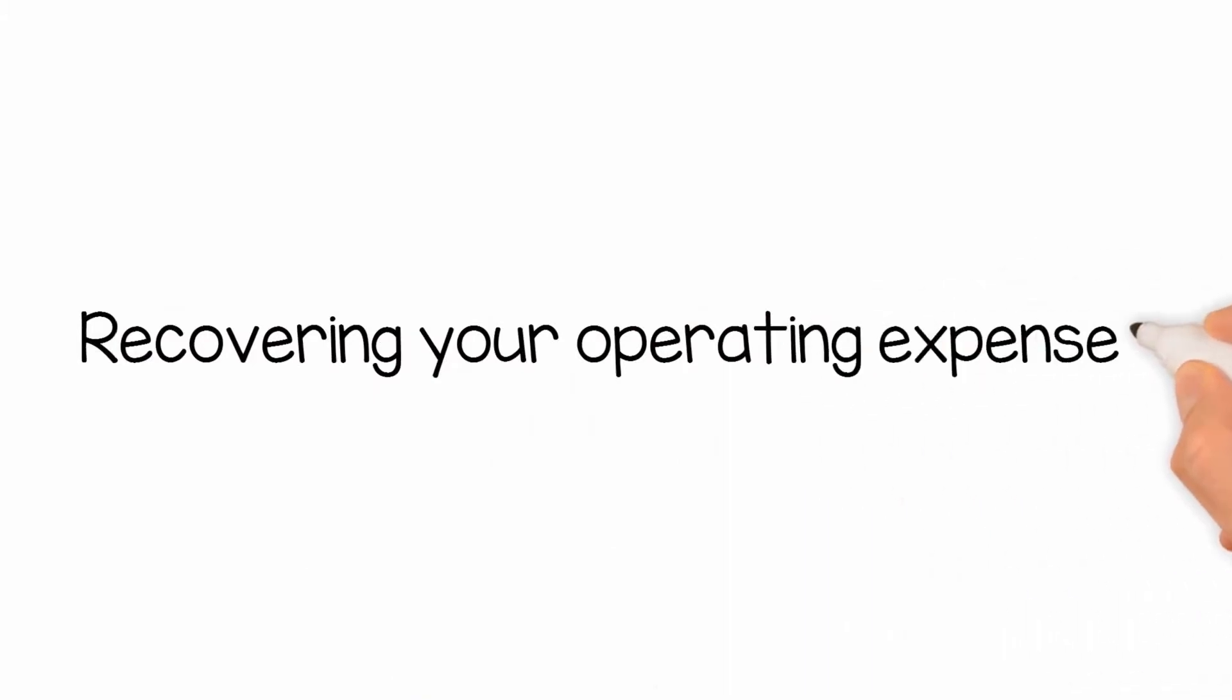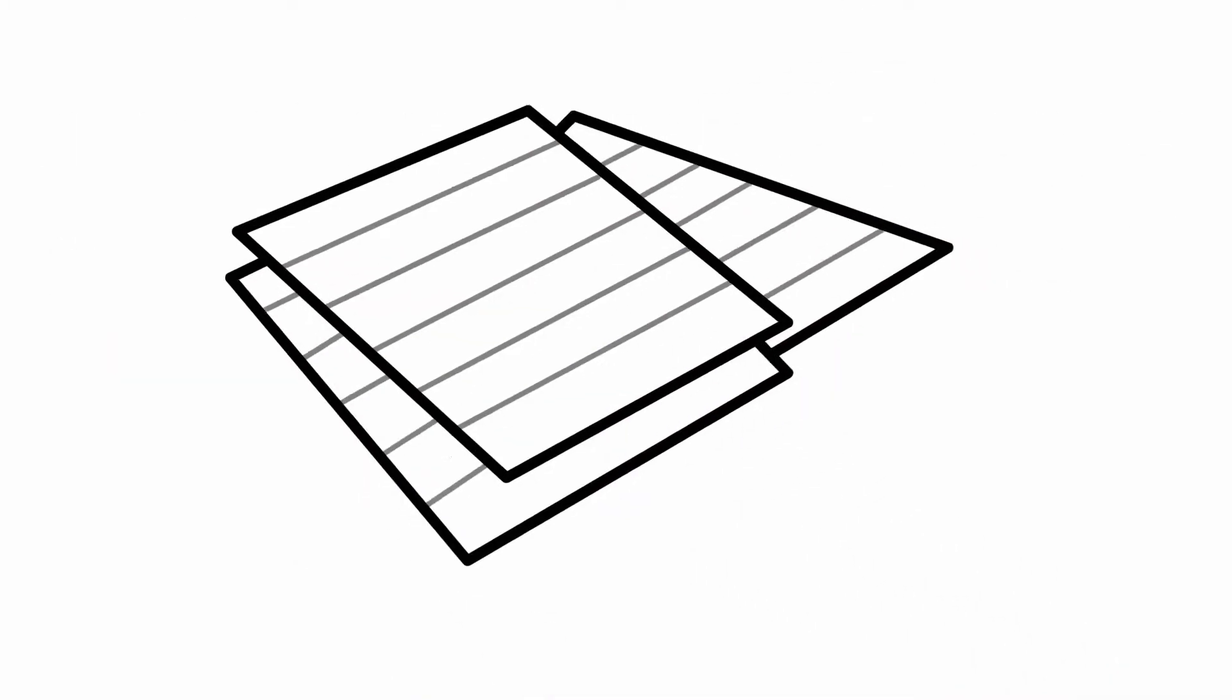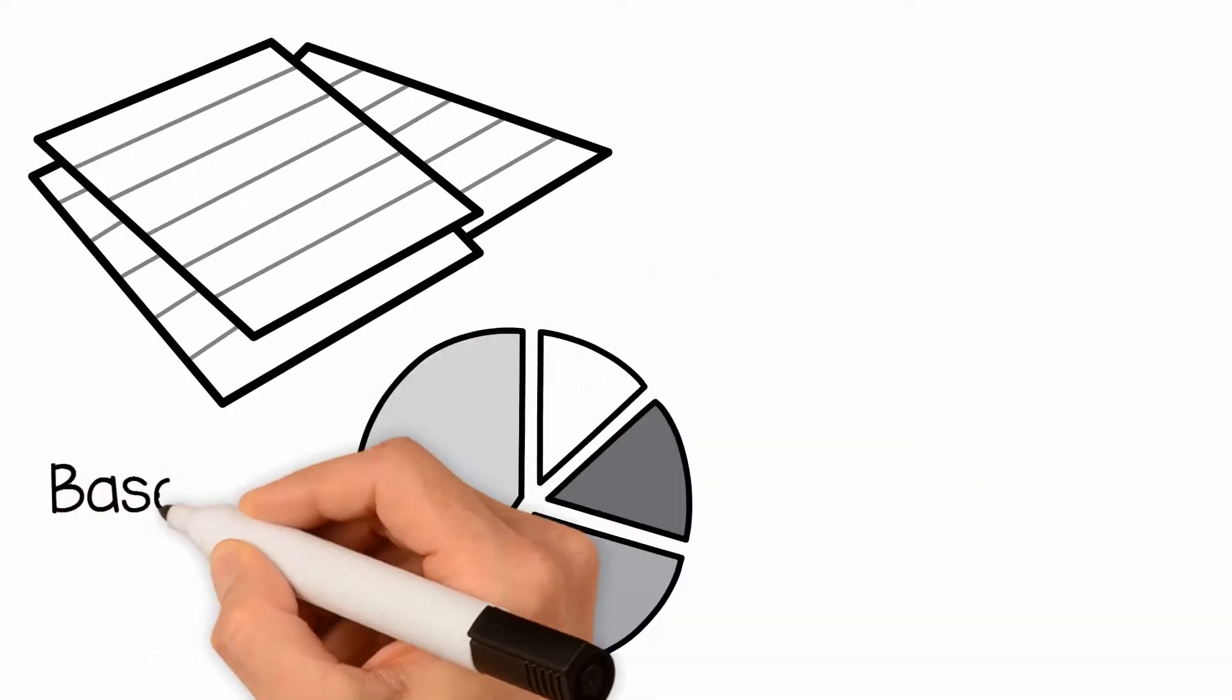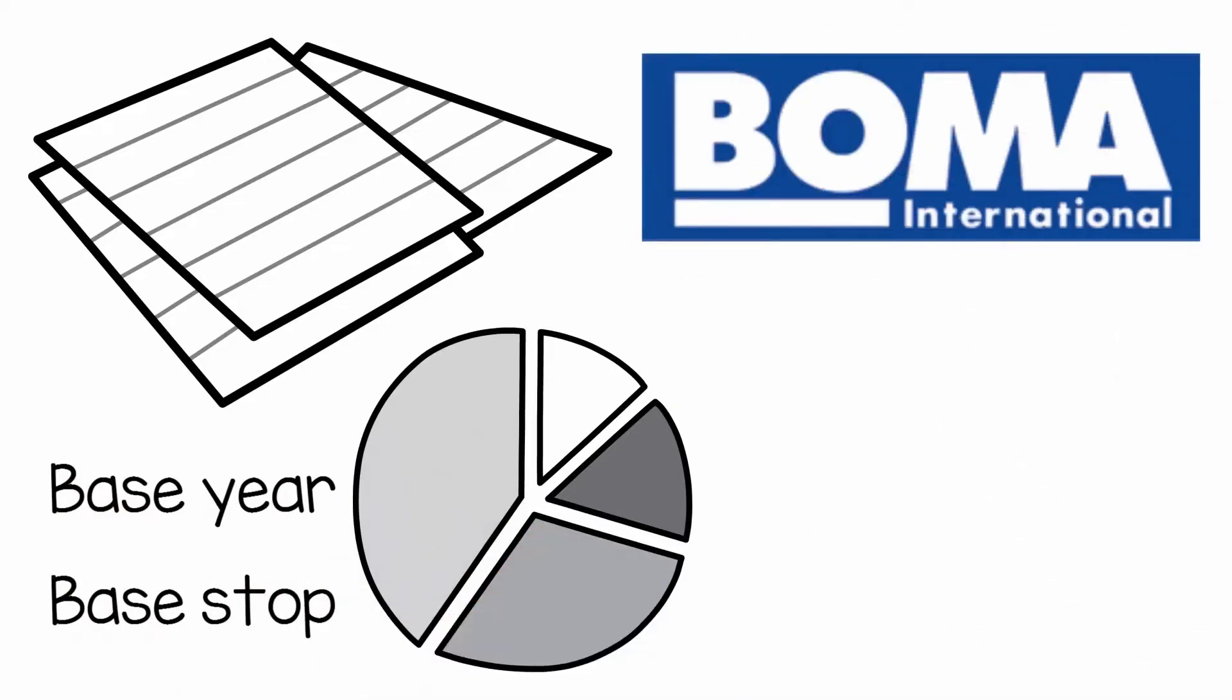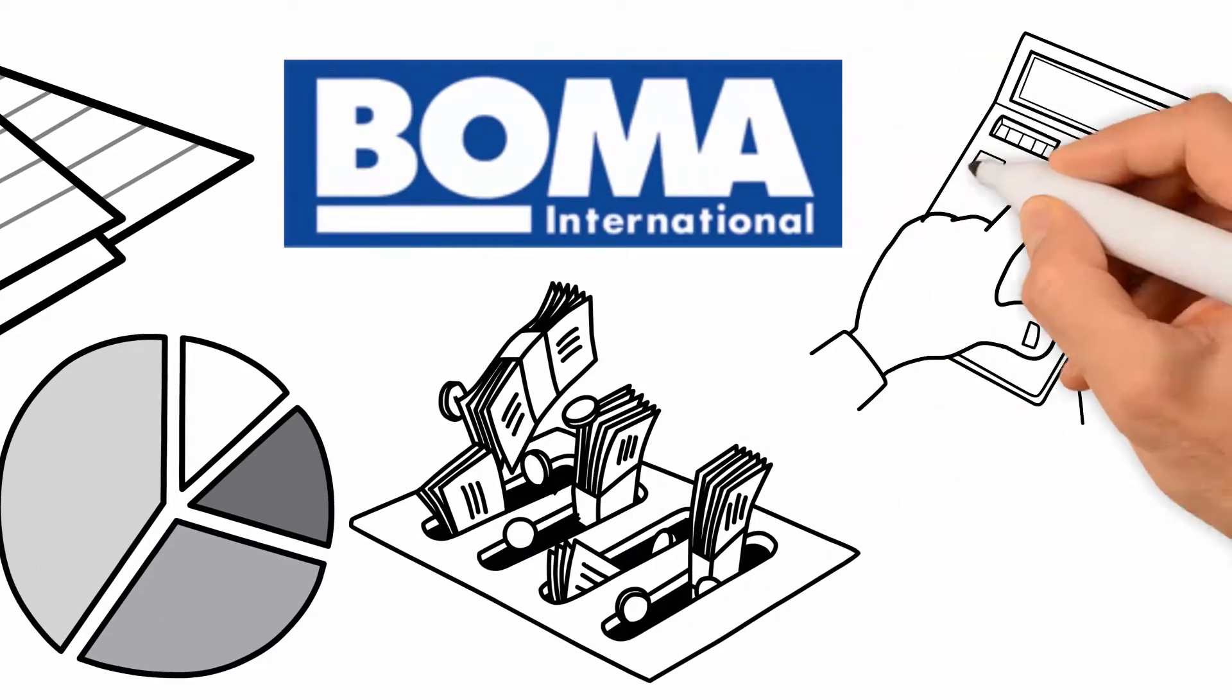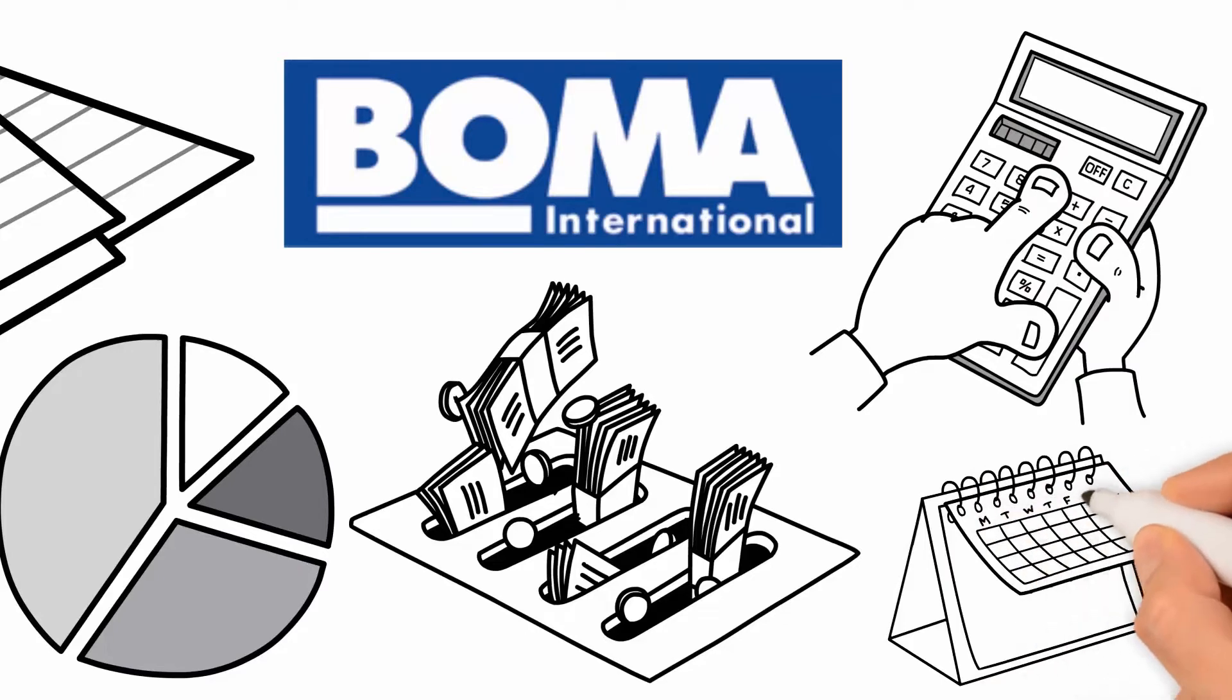Recovering your operating expenses with gross operating expense recovery models for gross leases. The operating expense component will be either base year or base stop. BOMA International defines base year as a base amount of operating expenses used as a foundation for calculating a long-term lease. This is typically the calendar year in which the lease is signed.